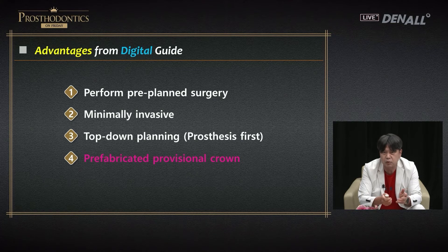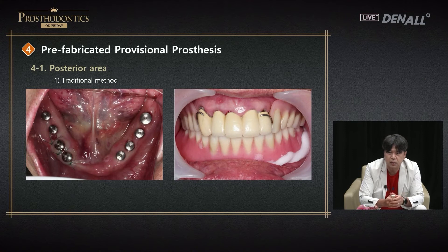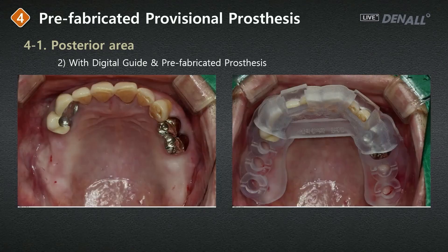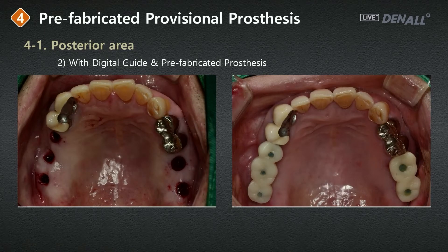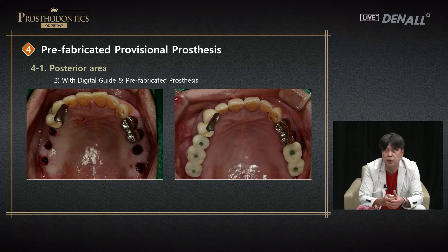In the past, in the posterior region, when an implant is placed, the existing denture was used after relining it. Using OneGuide, the patient who used an RPD — after placing the implant in the posterior region, right after surgery, abutments are connected and prefabricated provisionals were delivered bilaterally. The patient came with the RPD and one hour after the surgery, when leaving the clinic, they have all the teeth in the mouth, which makes patients very happy and is really satisfying for the surgeon to see.